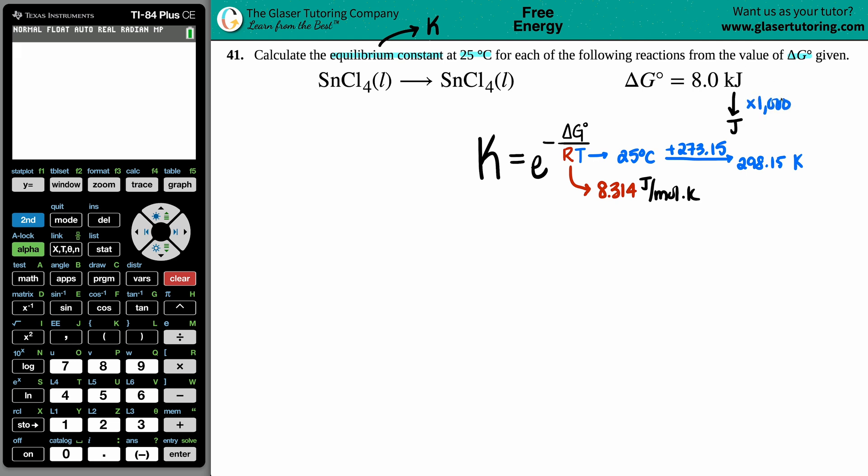So eight times a thousand is eight thousand, and that's the number that's going over here. All right, let's plug in.